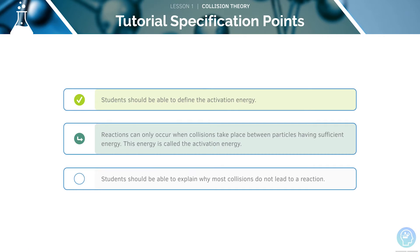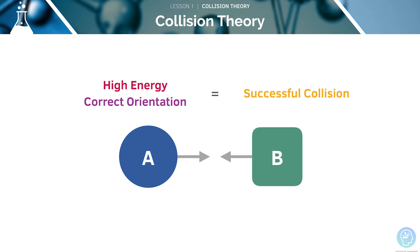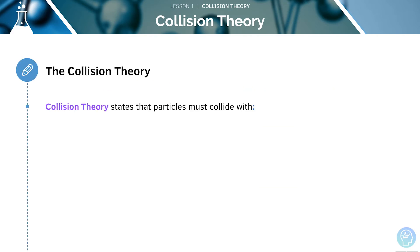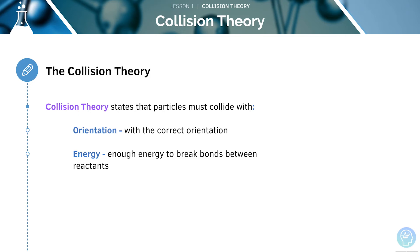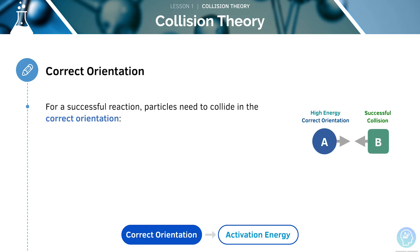Now, let's look at the conditions for a reaction to occur. Here, we can see that a particle with high energy and correct orientation will lead to a successful collision. The collision theory states that for a reaction to occur, the particles involved must collide with the correct orientation, and with enough energy so that bonds are broken between the reactants. For a reaction to be successful, the particles need to collide in the correct orientation so that the correct bonds will be broken or formed.